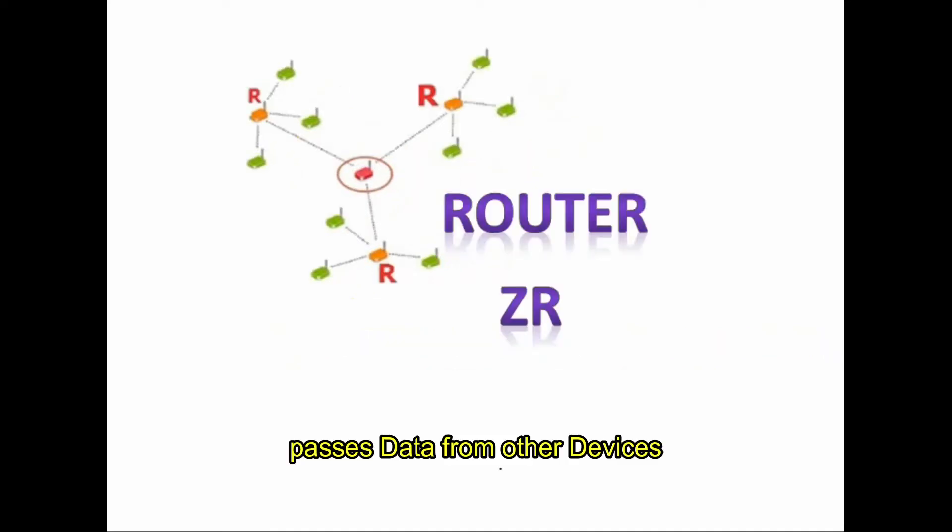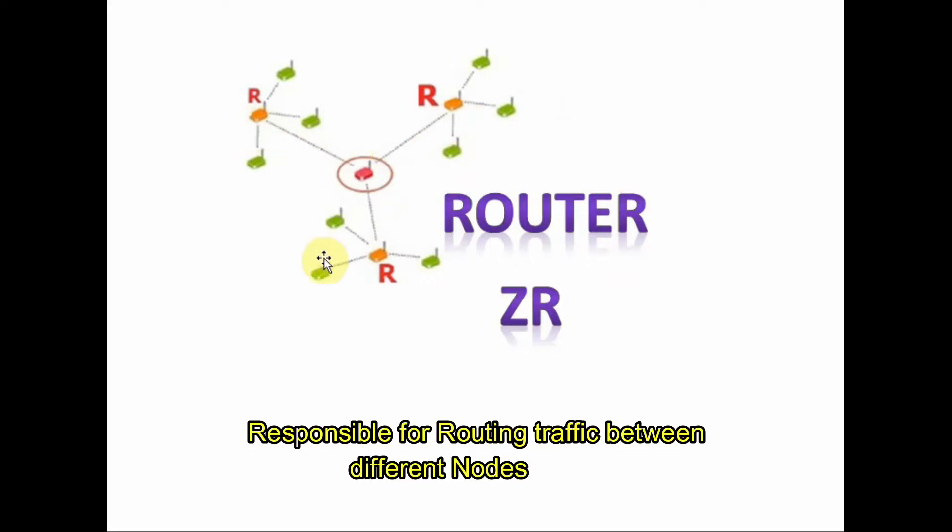Next one is ZR router which processes data from other devices. Router can start operation only when it establishes connection with ZC. Routers are responsible for routing traffic between different nodes and routers may not sleep.